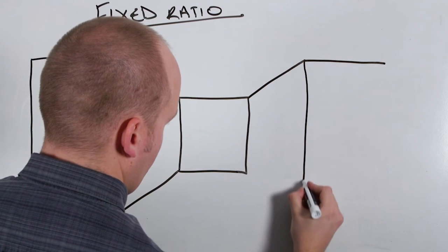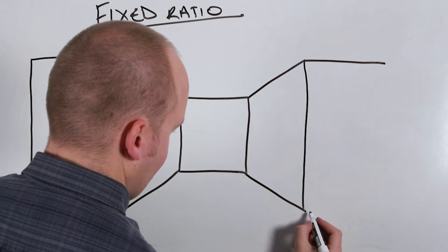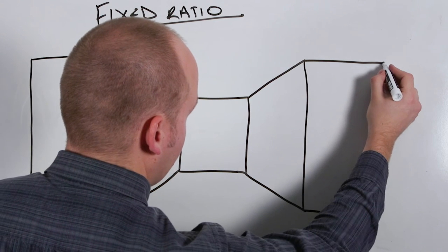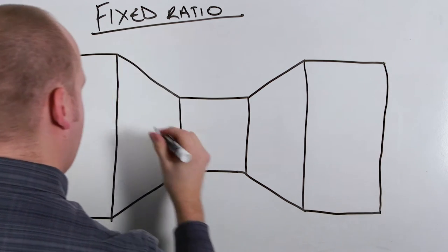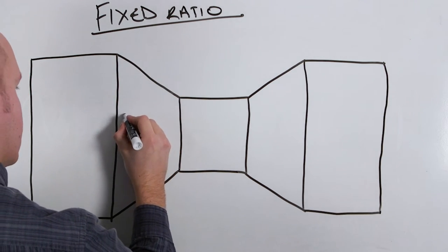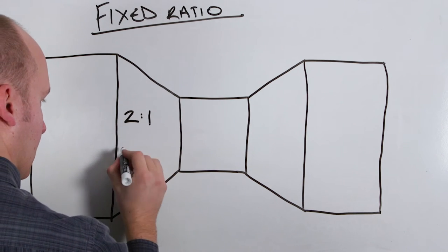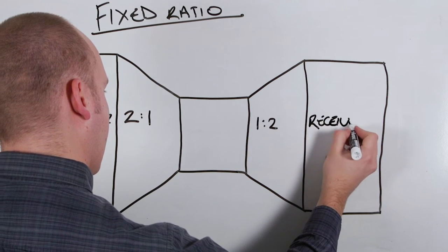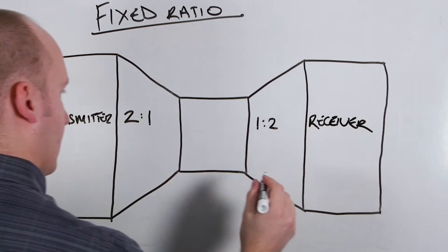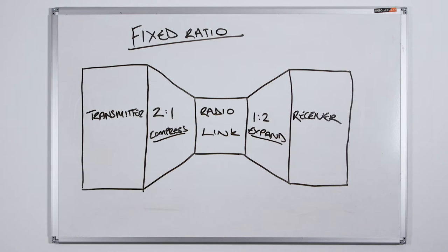The first type of companding we're going to cover is fixed ratio companding. In fixed ratio companding our audio signal is captured by the transmitter and then compressed by a fixed ratio, typically two to one. This is then coupled with an expansion in the receiver of one to two, restoring our original signal back to its full dynamic range.